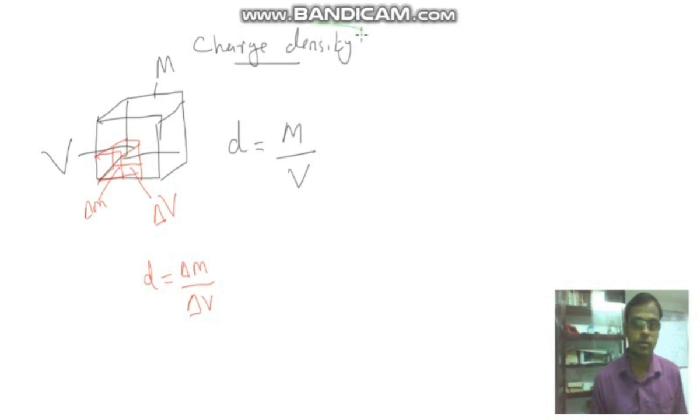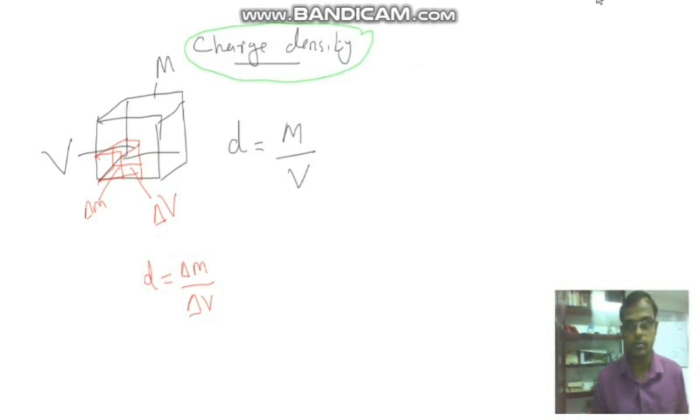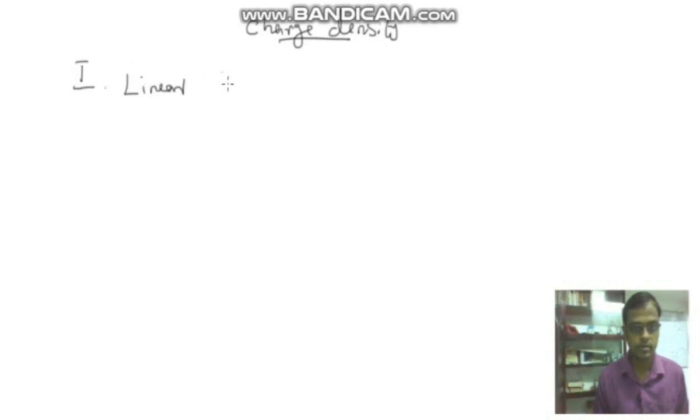We are going to learn now the charge density. There are mainly three different types of charge density. The first one is called linear charge density.